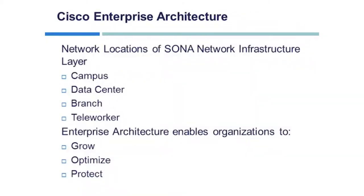Cisco Enterprise Architecture. The multiple network locations of the SONA Network Infrastructure Layer have been identified as: campus, data center, branch, and teleworker. The Cisco Enterprise Architecture enables organizations to grow, optimize, and protect the network infrastructure that runs business-critical operations.